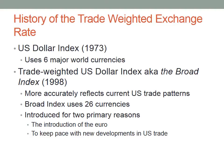In 1998, the U.S. Federal Reserve Board responded to the implementation of the euro by adopting the trade-weighted U.S. dollar index, also known as the broad index. The broad index more accurately reflects current U.S. trade patterns and helps keep pace with new developments in U.S. trade. The broad index uses 26 currencies. When the index was introduced, the 26 countries accounted for over 90% of total U.S. imports and exports.